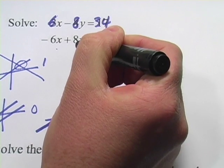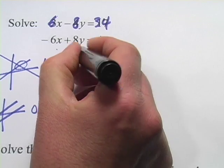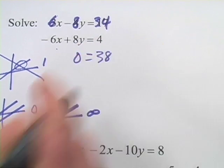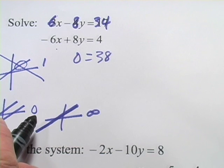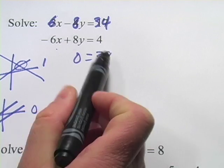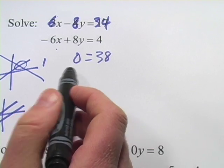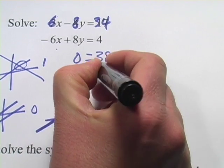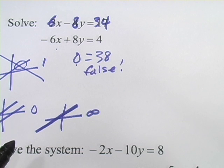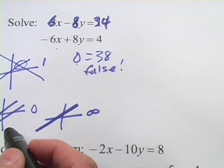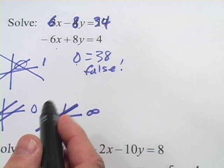Wait a minute — so do the y's. Negative 8 and positive 8y cancel, so all I get left with on the left side of the equation is 0, and on the right I get 38. That might look like a pretty strange result. The thing to ask yourself when you end up with something like this is: is the statement true? Is 0 equal to 38? And obviously that's false. And what that means is that there is no solution here — these must be two parallel lines and there will be no solutions, no point where they cross.